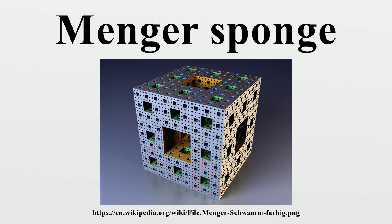The Menger sponge itself is the limit of this process after an infinite number of iterations. The following table lists the properties of the sponge as M(N), where N is the number of iterations performed on the first cube of unit side length.